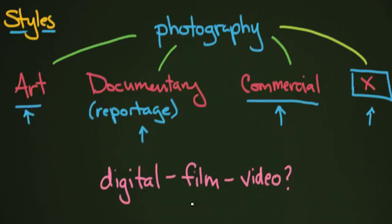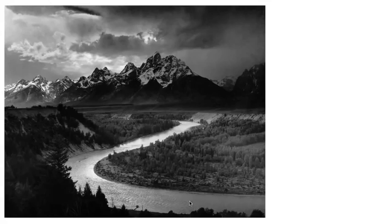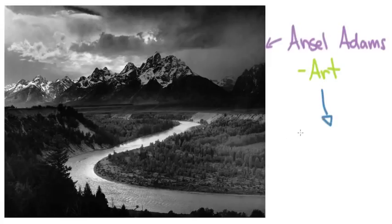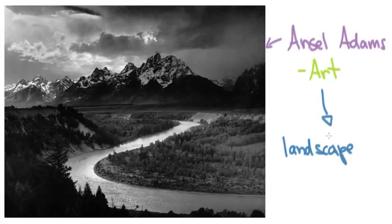Let's look at some different examples of photography. Here we have Ansel Adams, an American photographer of the 20th century, who is your quintessential landscape photographer. He was shooting in the style of an art photographer — landscape was his specialty, the thing he liked to photograph. Occasionally he did commercial work, but in general he was an art photographer.